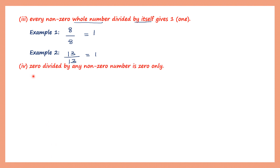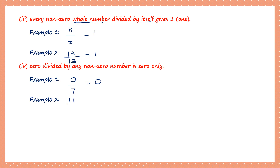Question 4: 0 divided by any non-zero number is 0 only. Example 1: take 0 divided by 7 — the answer is 0. Example 2: take 0 divided by 11 — when you divide 0 by any non-zero number, your answer is 0.